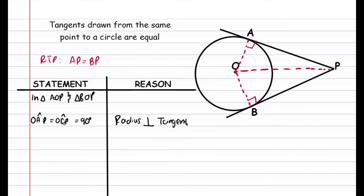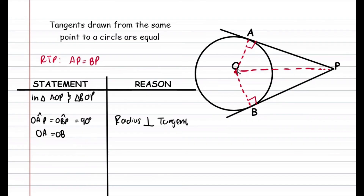That is one angle equal in both triangles. The next thing we can see is that OA and OB are both radii — OA is a radius and OB is also a radius, so they're equal radii. We can go ahead and say that OA is equal to OB since they're both radii of the circle. Reason: equal radii.